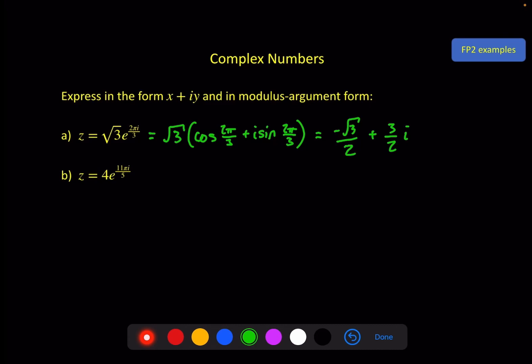So we've got root 3 cosine 2π by 3 which gives us minus root 3 over 2 for the real part and then we've got root 3 times sine 2π over 3 for the imaginary part and in this case that is 3 over 2 i. The second one is a little bit different because when you put something in modulus argument form normally we use the principal argument here between minus π and π.